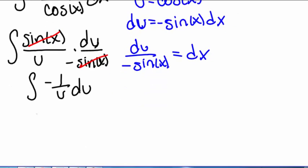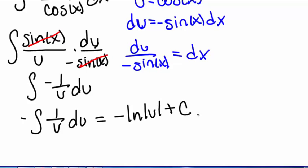We can pull out the negative sign to give us the integral of 1 over u du. And hopefully you remember that the integral of 1 over u is the natural log of the absolute value of u. So negative natural log of the absolute value of u plus a constant c.